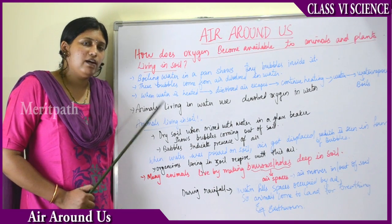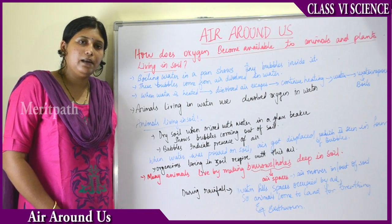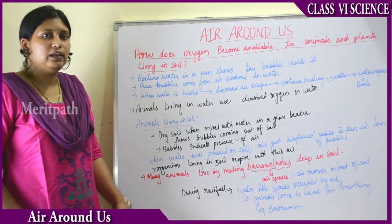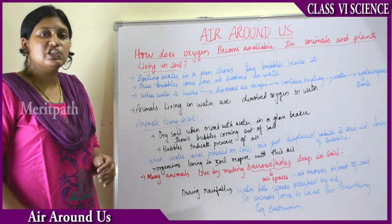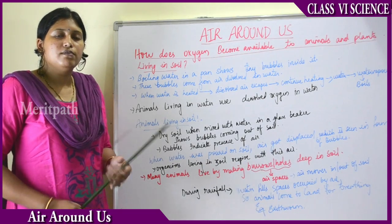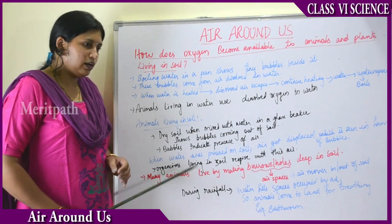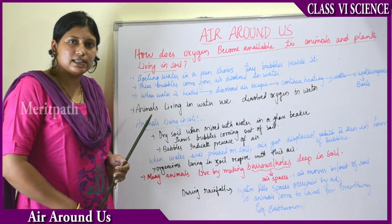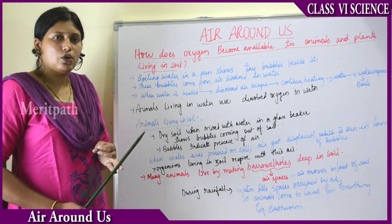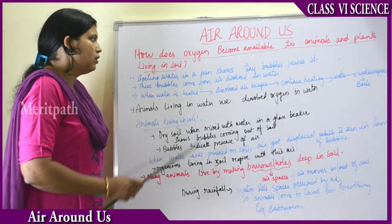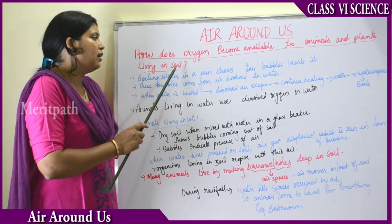Animals living in water breathe with the help of dissolved oxygen in water. Animals or plants living in the soil breathe through holes dug in the soil which have air spaces, letting air move up and down. Dry soil also has its own air spaces which help movement of air, supporting microorganisms, animals, and plants living in the soil.